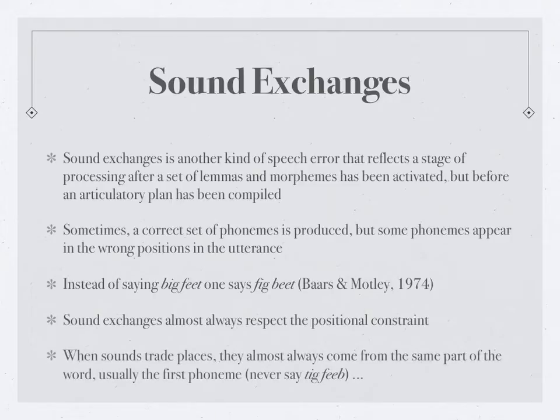When sounds exchange places in speech errors, they almost always come from the same part of the word — usually the first phoneme. For example, 'big feet' becomes 'fig beat,' so the error takes place at the level of the first sounds of each word. We can't have something like 'tig feet.' This is an example of the positional constraint as a rule governing sound exchange errors.